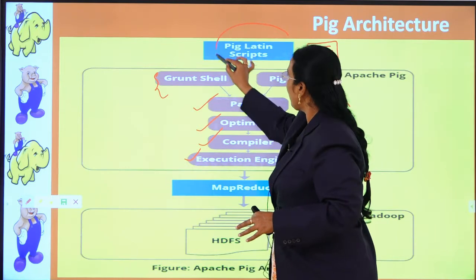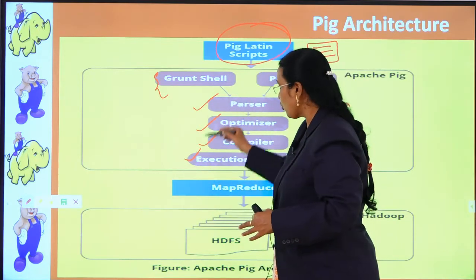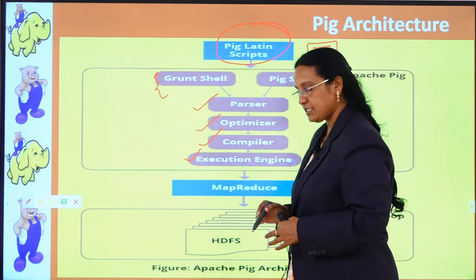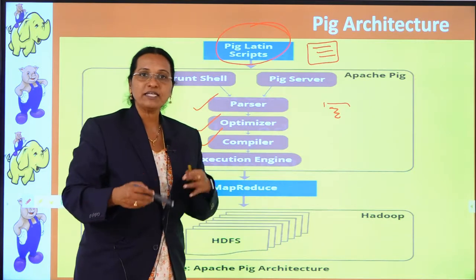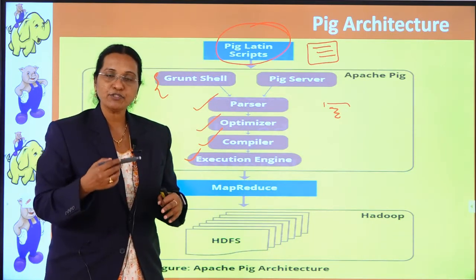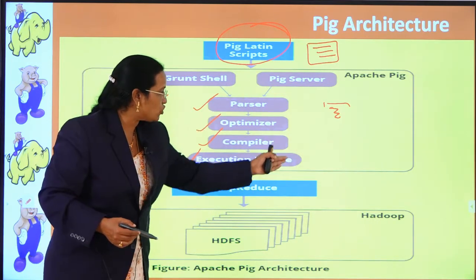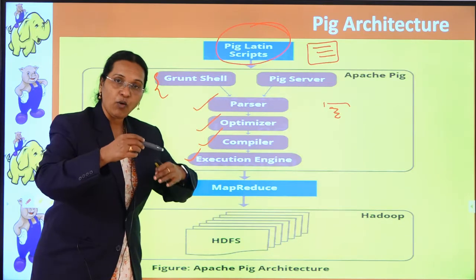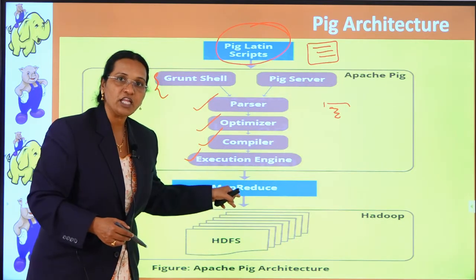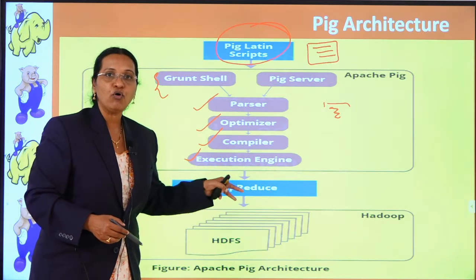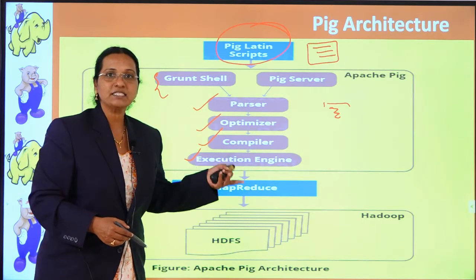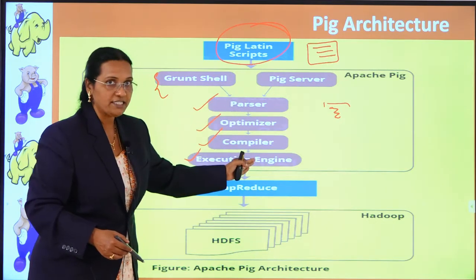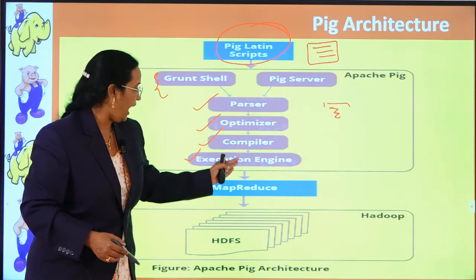Whatever Pig scripts are written, to process them, they go through four stages: parsers, optimizers, compilers, and execution engine. Even though the programmer is not writing MapReduce code, once the Pig scripts go through these phases — parser phase, optimizer phase, compiler phase, and execution phase — the scripts are internally converted into MapReduce code.